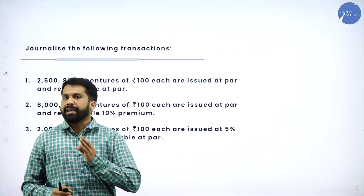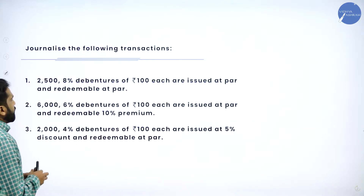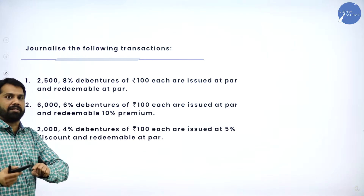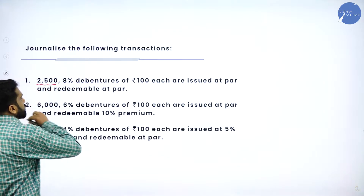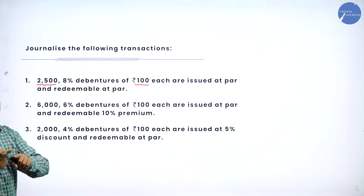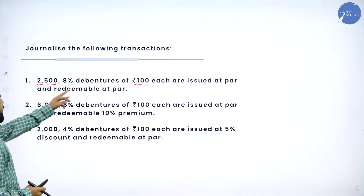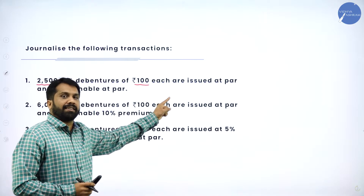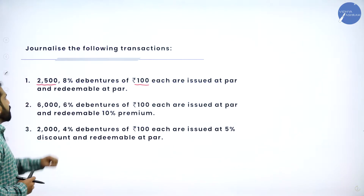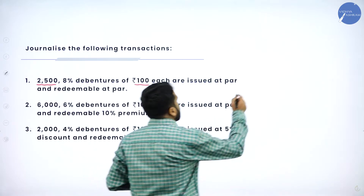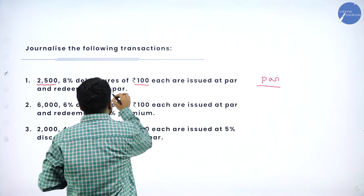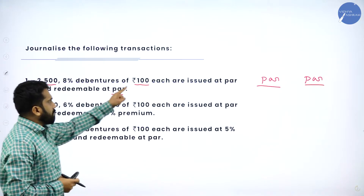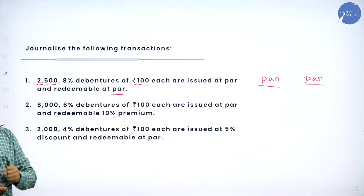The major change in this problem: every previous problem gave the whole amount directly, but here you need to calculate it yourself. They have given the number of shares and the share value is 100, so you have to multiply them. For example, 2,500 multiplied with 100 gives you 2 lakh 50,000.